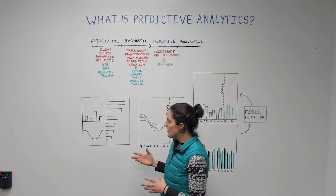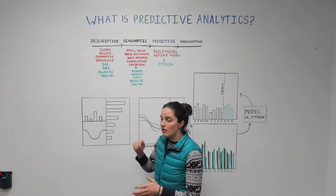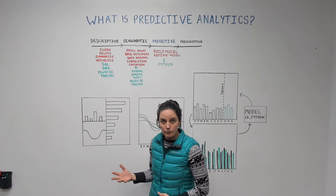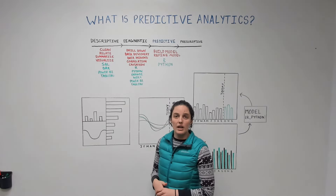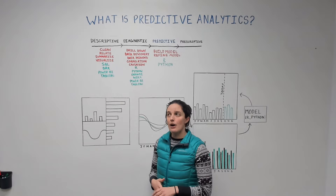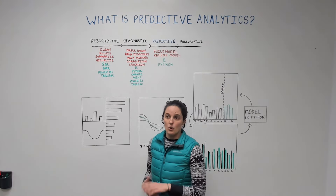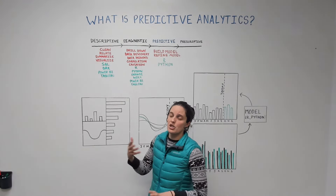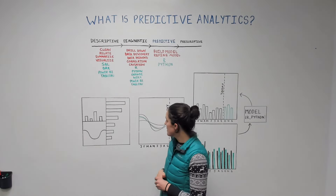Now you really want to know what's going to happen in my business. One really common question is: how many of a given product am I going to sell for every store? This can really help answer questions around how you're going to support supply chain processes, or how you're going to manage profits.